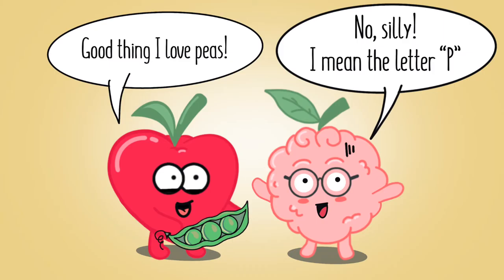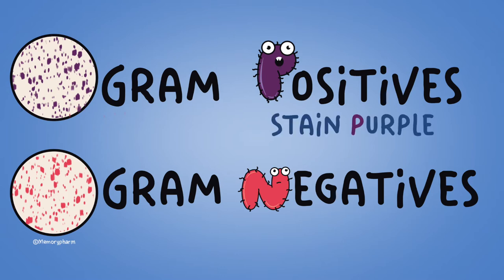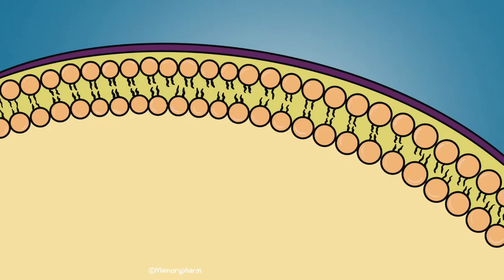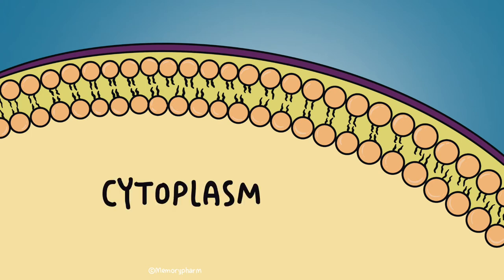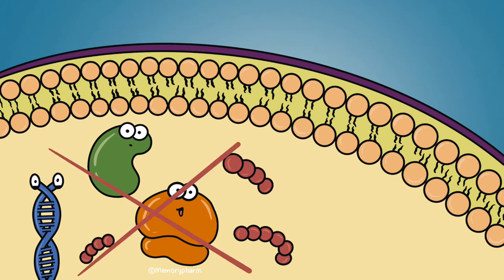A great memorization tip is to keep your P's together. Gram-positive bacteria has a P in the name to help you remember that it stains purple, while gram-negative bacteria does not, because they stain different shades of red, such as reddish pink. Once you have made it past the cytoplasmic membrane and cell wall, you have reached the organism's cytoplasm, wherein resides the organism's ribosomes, genetic material, and other enzymes important to the bacterium's survival — all things the antibiotics have been designed to target.